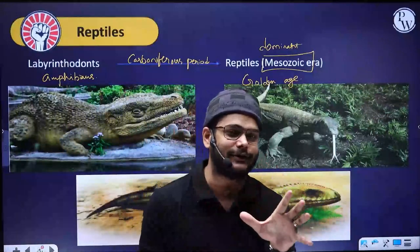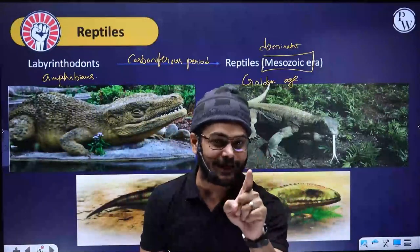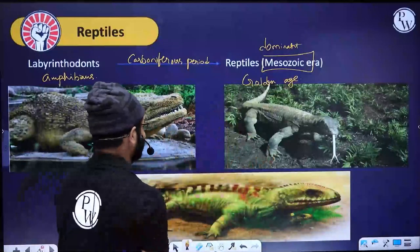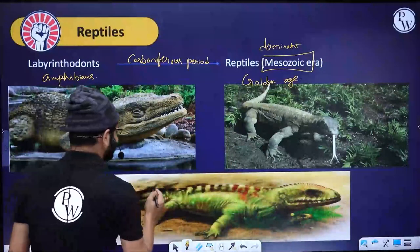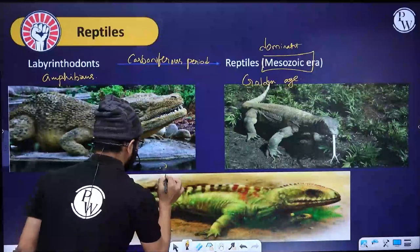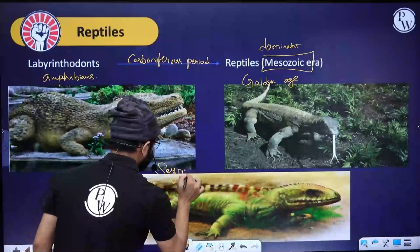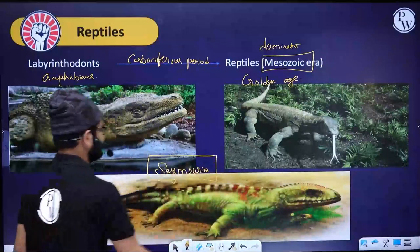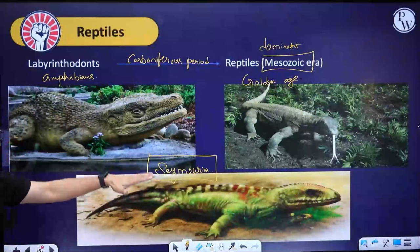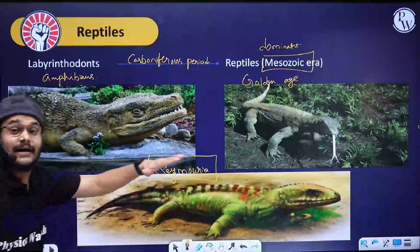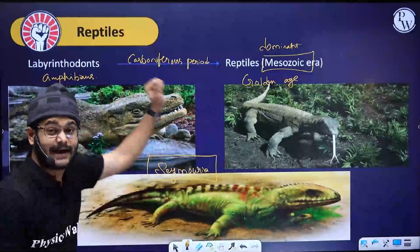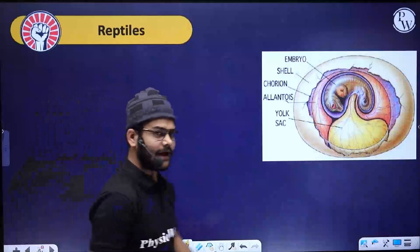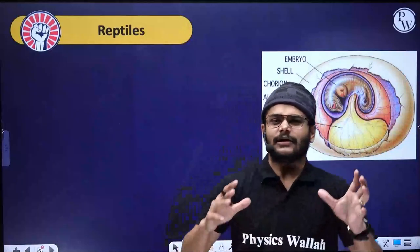The connecting link between amphibians and reptiles is called as Seymouria. This is the Seymouria, and it is the connecting link between amphibians and reptiles.